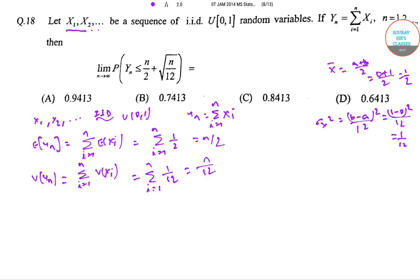Now we need to find out the limit as n tends to infinity of P(Yn ≤ n/2 + √(n/12)). This can be written as Yn minus n/2, if we subtract n/2 from both sides and then divide the whole thing by √(n/12), so we will get the right-hand side as 1.